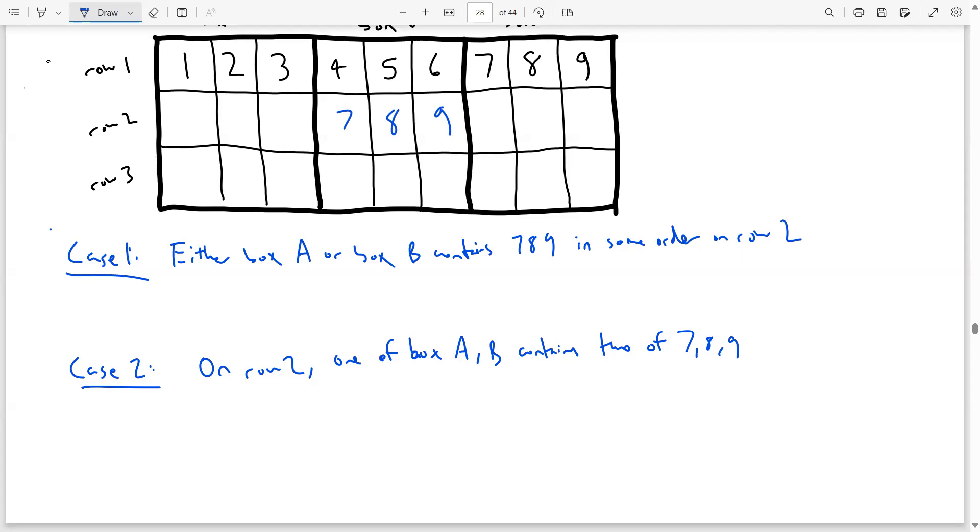For example, if we know that box B contains 7, 8, 9 in some order, this means that box A has to contain 4, 5, 6 in some order. And then similarly, box C will contain 1, 2, 3.